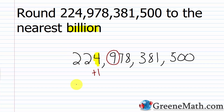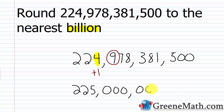This 2 and this 2 will stay the same. 4 plus 1 gives me 5. Then we replace everything to the right of the 4, the digit in the roundoff place, with a 0. So 224,978,381,500 rounded to the nearest billion is 225 billion.